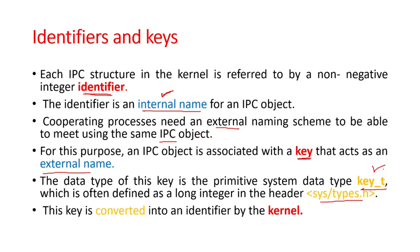The length of the key is system-dependent, so we cannot use long or integer directly. Rather, it has to be defined as key_t. This key is then converted into the identifier by the kernel. So that is about identifiers and keys.